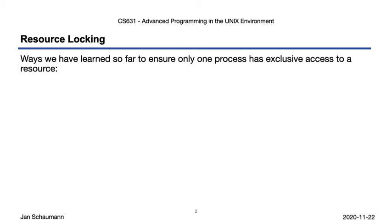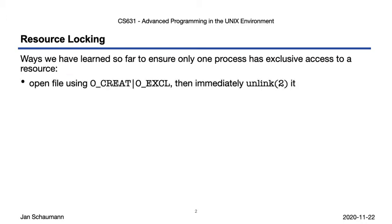Suppose you have a file and you want to ensure that your current process has exclusive access. One thing we can do is create a new file exclusively and then immediately unlink it. As long as we have an open file handle, the file blocks are not released, and we can continue to operate on the file handle. Since we unlinked it right away, no other process can open it, so we know we have exclusive access.